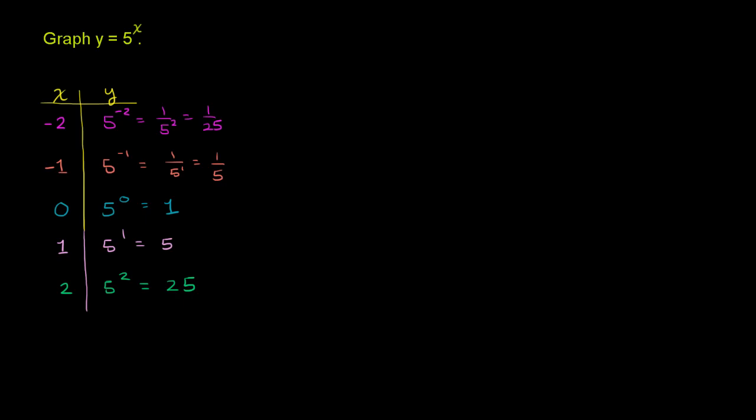Now we can plot it to see how this actually looks. Let me get some graph paper going. My x's go as low as negative 2, as high as positive 2, and my y's go all the way from 1/25th to 25. So this could be my x axis, and let's make this my y axis. My x values: negative 2, negative 1, 0, 1, and positive 2.